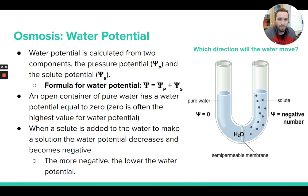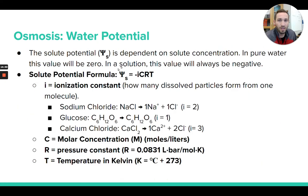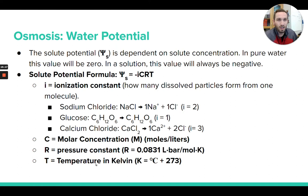The other component is the solute potential, and this does have a formula you're expected to use and calculate with. The formula for solute potential is: solute potential = −iCRT. You don't need to memorize this formula — it's provided on your AP exam formula sheet, along with what each variable means.